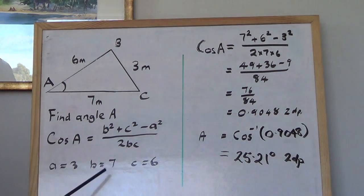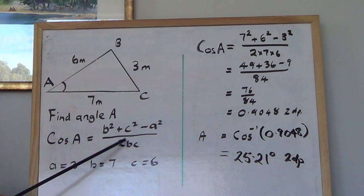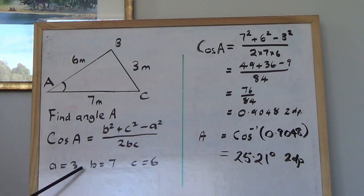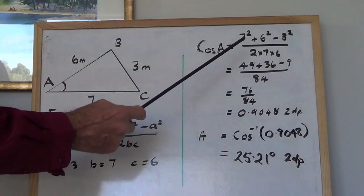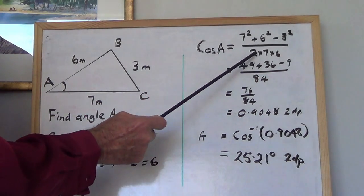See, so you end up with, see, 7 goes there, 6 goes there. There's a 7 there and a 6 there and the a goes there. So there it is all there. 7 squared plus 6 squared minus 3 squared over 2 times 7 times 6.